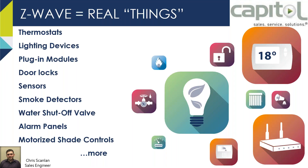There are over 1,500 Z-Wave devices out there, constantly growing. Things like thermostats, lighting devices, plug-in modules, door locks, sensors, smoke detectors, water shutoff valves, alarm sensors, motorized shades, gate controllers, water sensors — there are even Z-Wave mouse traps that can text you or flash lights when triggered. You're not going to be in a situation where there's no device for what you need.